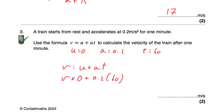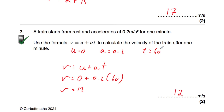So now we just need to work this out. As a calculator question, you could type in 0 plus 0.2 times 60 into your calculator. 0.2 times 60 is 12, and 0 plus 12 is 12. So velocity equals 12 metres per second. After one minute, the train will be travelling at 12 metres per second.